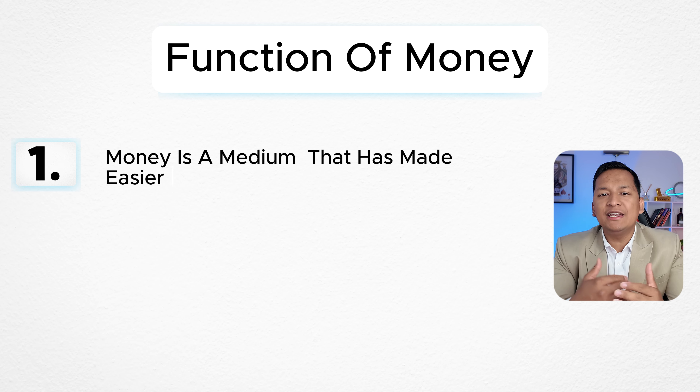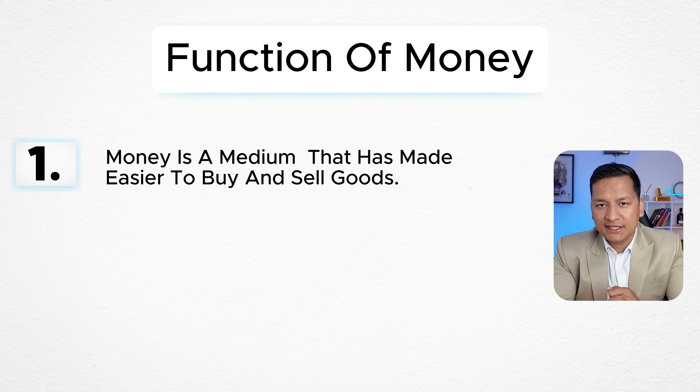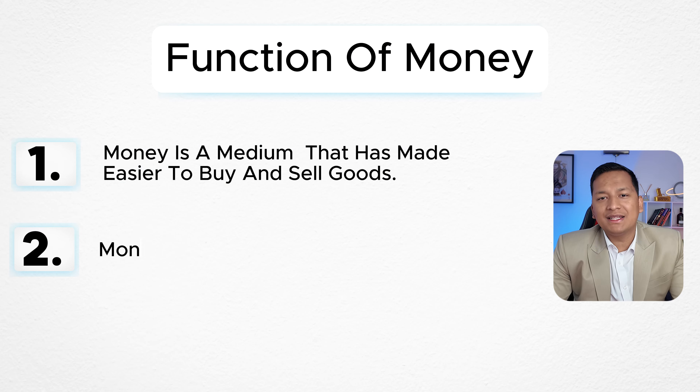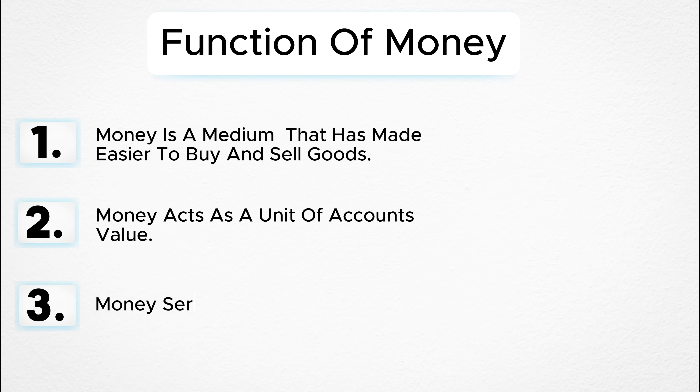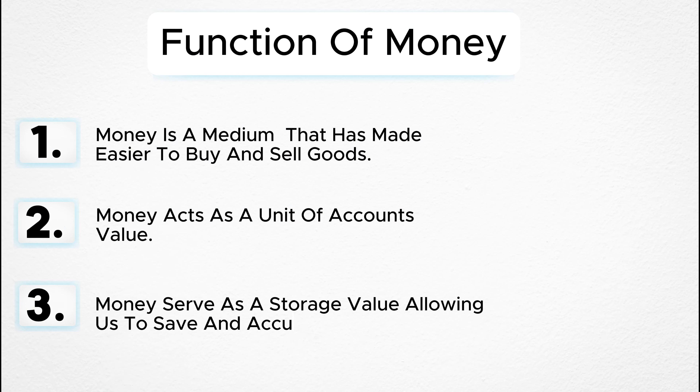The three main primary functions of money in our economy are: first, it acts as a medium of exchange. Secondly, it acts as a unit of account value — if you have goods or services, you will get the value of it. Lastly, money serves as a store of value, allowing us to save and accumulate wealth over time.